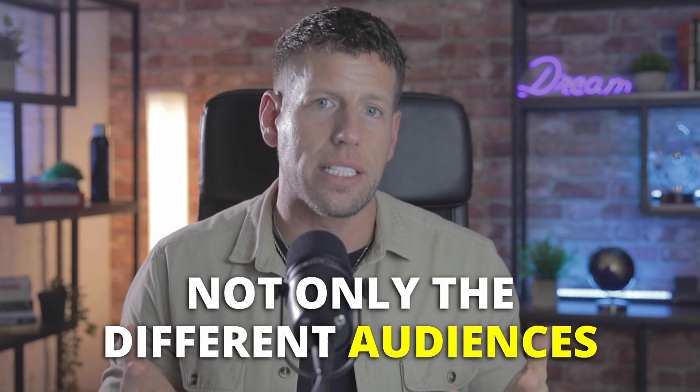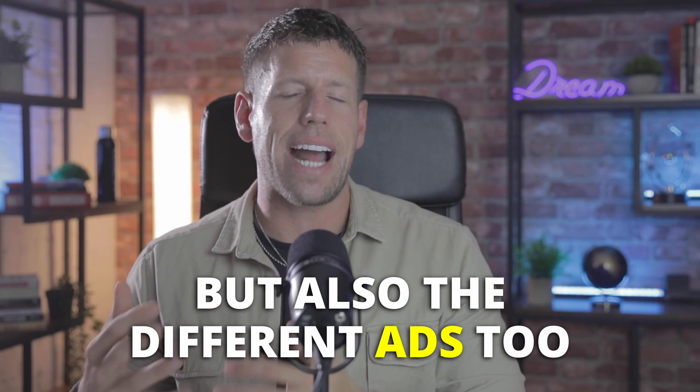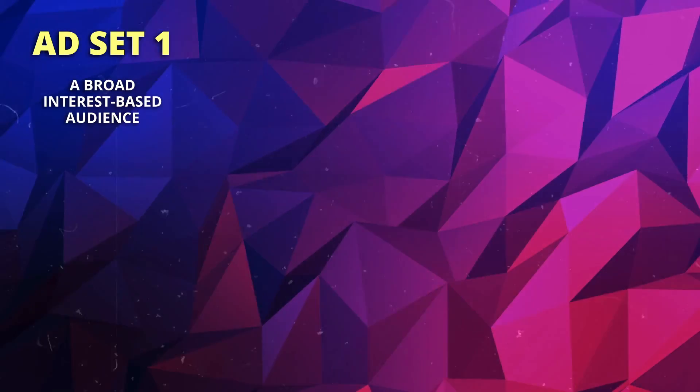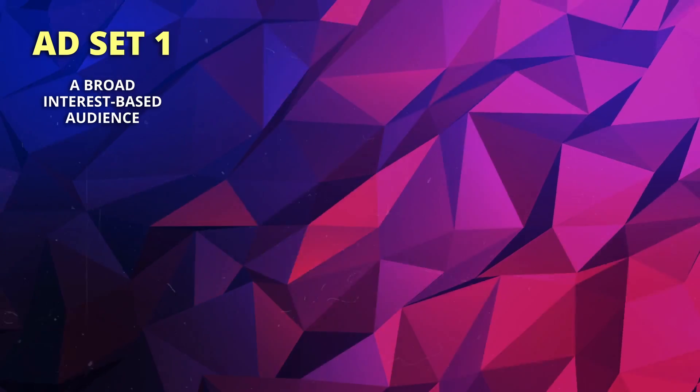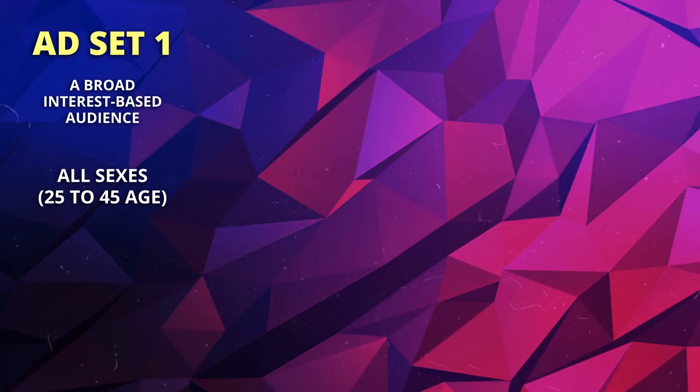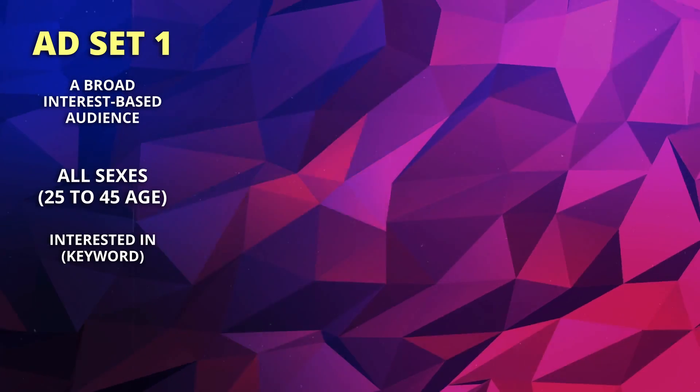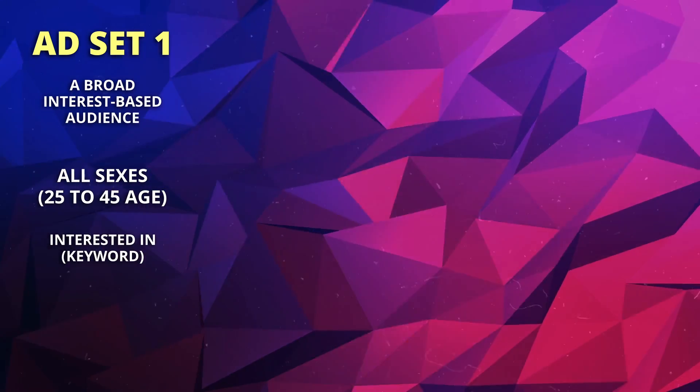What we're going to do now is break this down so you can see not only the different audiences you should be targeting, but also the different ads too. Let's start with audiences, or ad sets as they're known in Facebook ads. Ad set one I would call a broad interest-based audience — for example, all sexes between the ages of 25 and 45 interested in a specific keyword like coaching, business, or marketing.